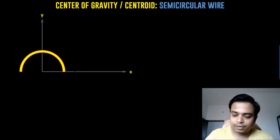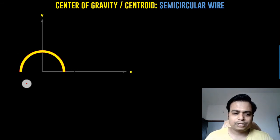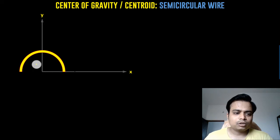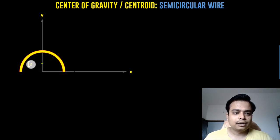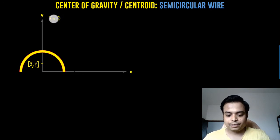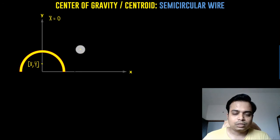Let's kick off by fitting in a coordinate axis. Just by observation, you can work out that the centroid is going to lie somewhere along the y-axis. The centroid of this wire is over here, so it's going to have coordinates x̄ and ȳ, and from observation you can see x̄ is going to be equal to zero.